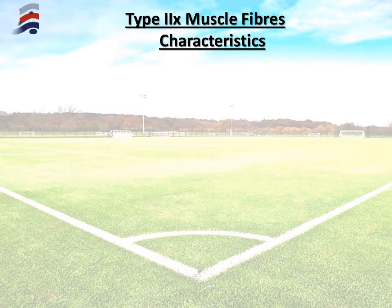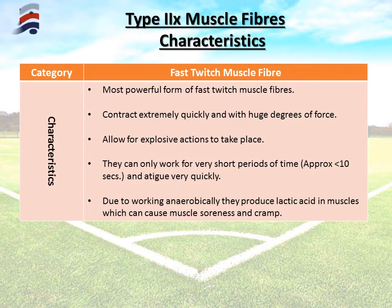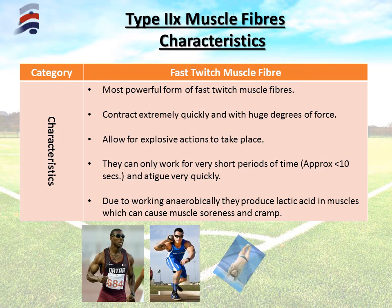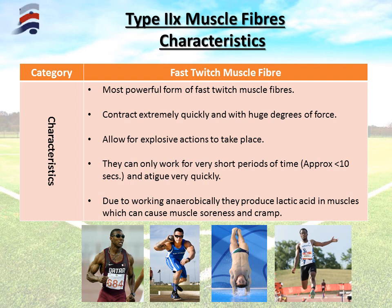Type 2X is also a fast twitch muscle fibre, but it's the most powerful form — contracting extremely quickly and producing the highest amount of force of all muscle fibre types. Explosive actions take place when using type 2X. They only work for a very short period of time, often less than 10 seconds, and fatigue very quickly. Like type 2A they work anaerobically, using existing stores within the muscles, but they can create lactic acid — a chemical which causes muscles to become sore or cramp. Type 2X is associated with explosive sports such as sprinting, shot put, Olympic platform diving, long jump or triple jump — anything requiring maximum force in a very short period of time.